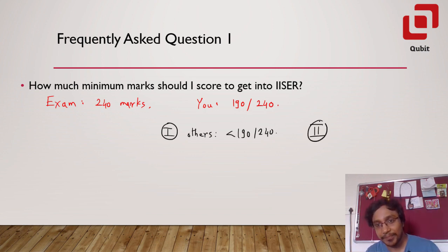But as opposed to that, if other students score greater than your score, you might be thinking 190 out of 240 is a very good score, I will get into any of the IISERs or IISc that I want. But because others did better than you, unfortunately in that case you will not get any seat. Now these are the two extreme situations. The conclusion is it's not the number of marks or the minimum marks that matters, but what matters is your rank. Rank is going to matter. Rank matters the most.